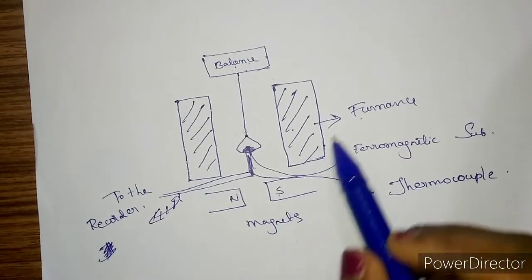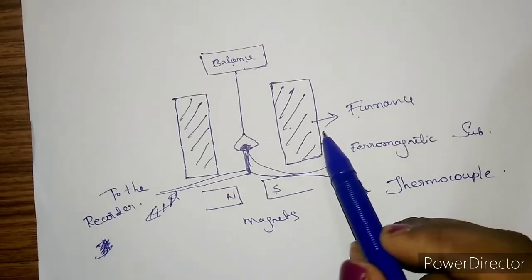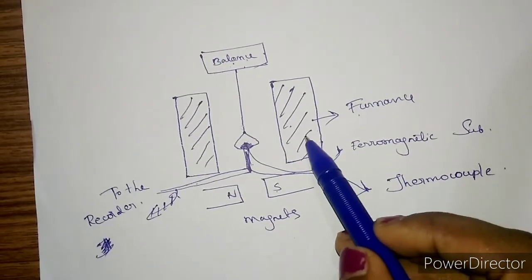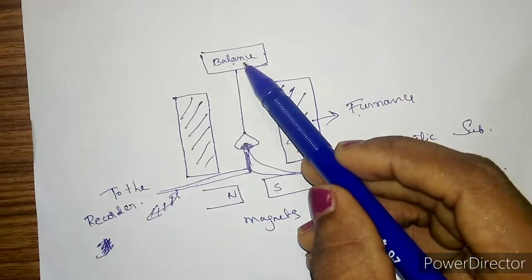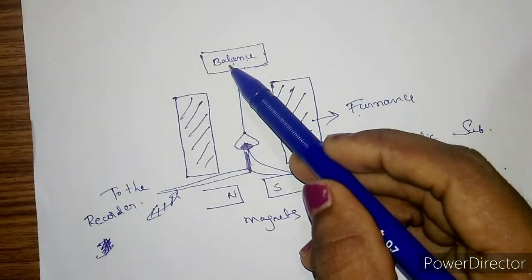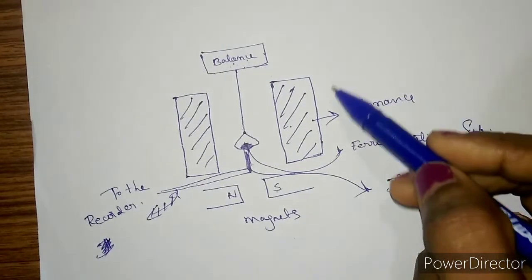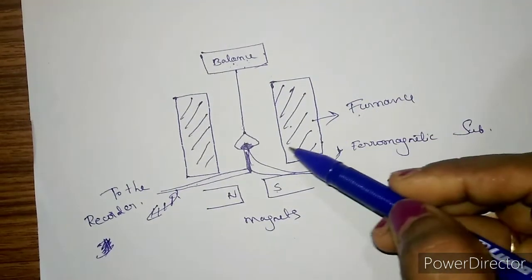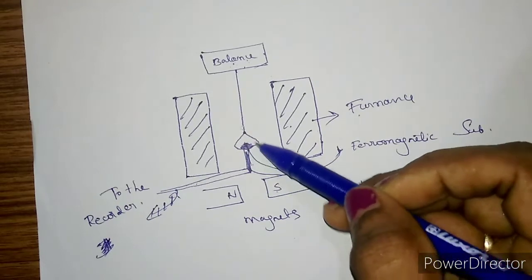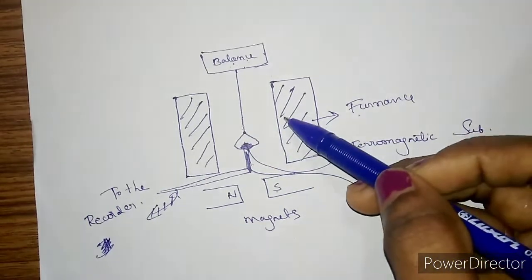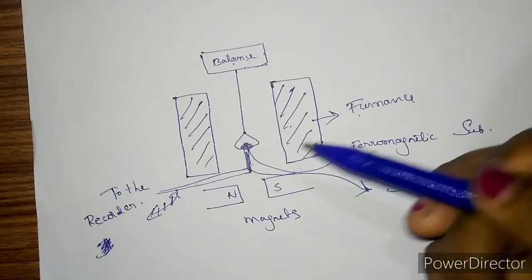Then you have to apply heat by means of the furnace, and at each interval of rising temperature, you have to measure the weight of the sample through the balance. At one particular temperature, the weight of this ferromagnetic material suddenly falls to the minimum weight.